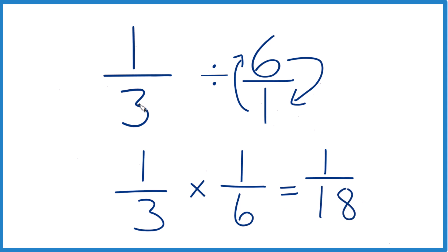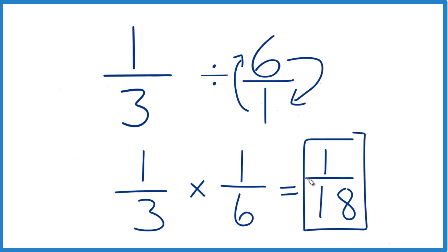So one-third divided by six equals one-eighteenth. And so does one-third times one-sixth — they both equal one over 18. That does make sense because we have one-third, which is a fraction less than one. We're trying to see how many times six fits into that fraction less than one, so we should get another fraction that's smaller than one-third. And we do.